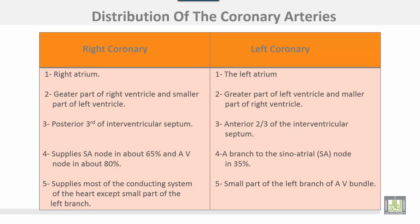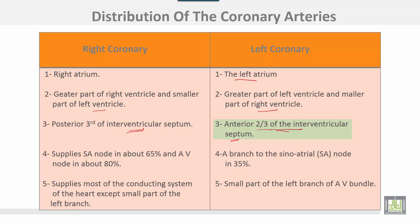Summary of distribution of the coronary arteries: the right coronary supplies mainly the right atrium, and the left coronary supplies mainly the left atrium. A greater part of the right ventricle and smaller part of the left ventricle come from the right coronary. Greater part of the left ventricle and smaller part of the right come from the left coronary. The posterior third of the interventricular septum and anterior two-thirds come from the left coronary. The SA node is supplied approximately 65% and the AV node about 80% from the right coronary.